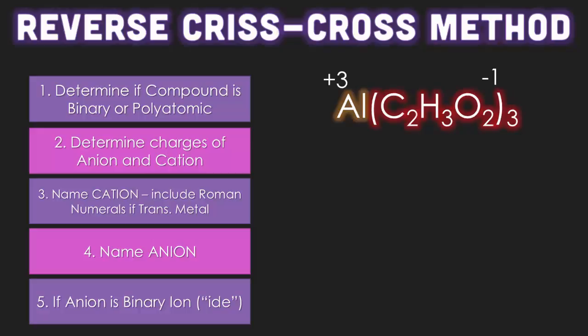Now we have to name them. Is aluminum a transition metal? Does it have more than one charge? No, it doesn't. So do we have to use a Roman numeral for aluminum? No, we don't. So that means we're going to write aluminum. And now we just have to name the anion. Is it binary? No. So what is C2H3O2? Acetate. So that formula is just simply called aluminum acetate. Anything else we have to do? No, I don't think so. Perfect.